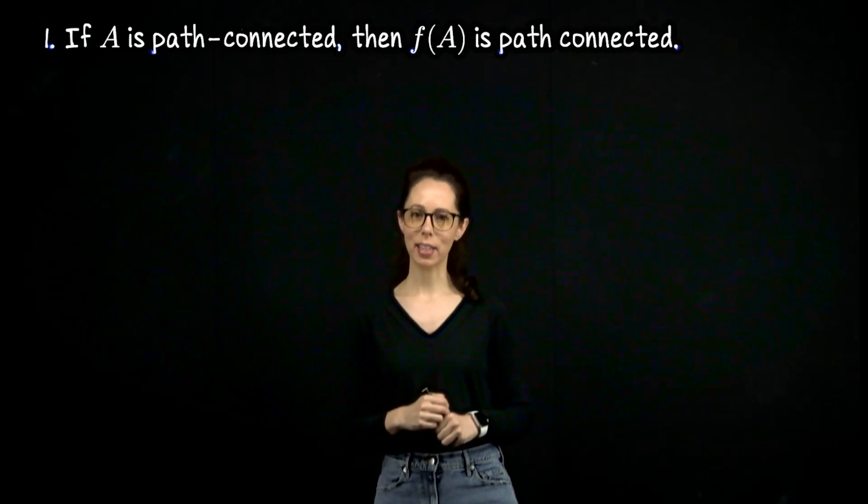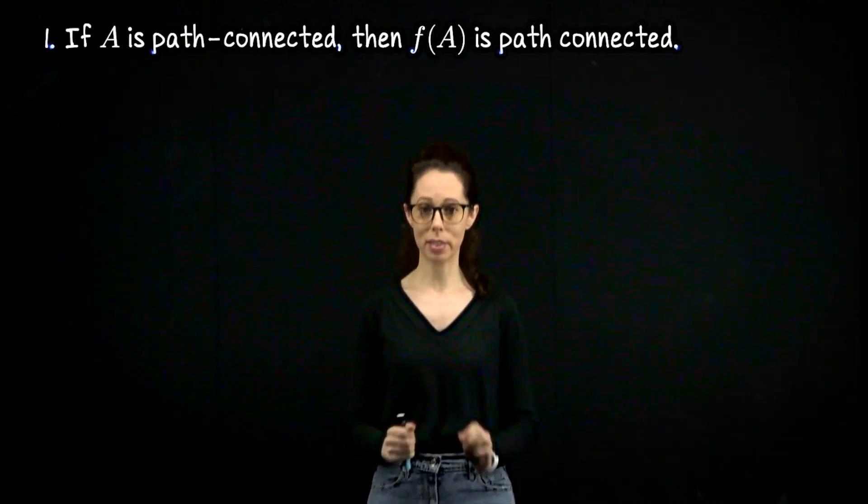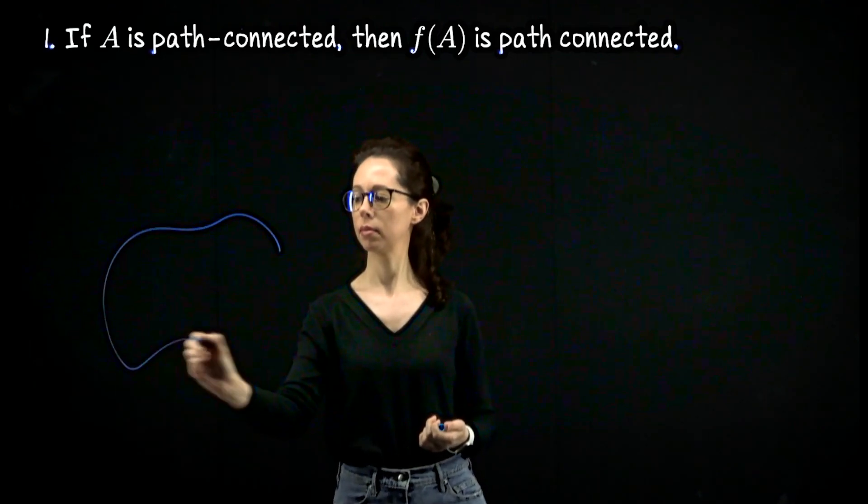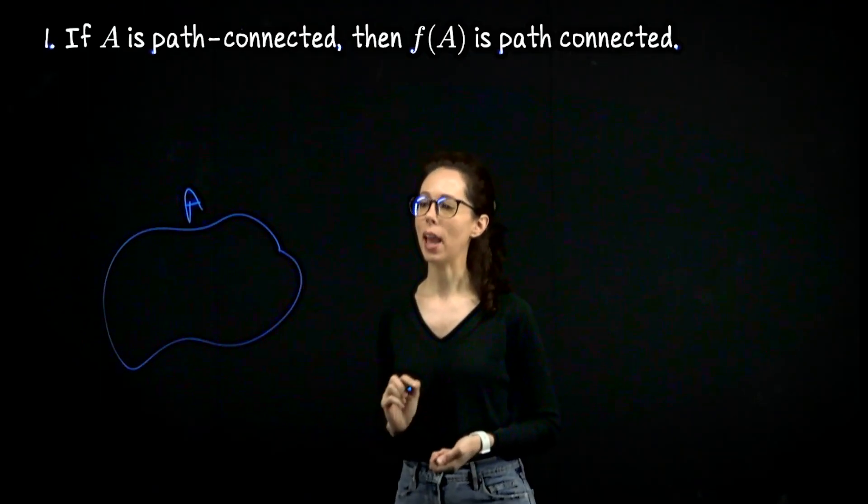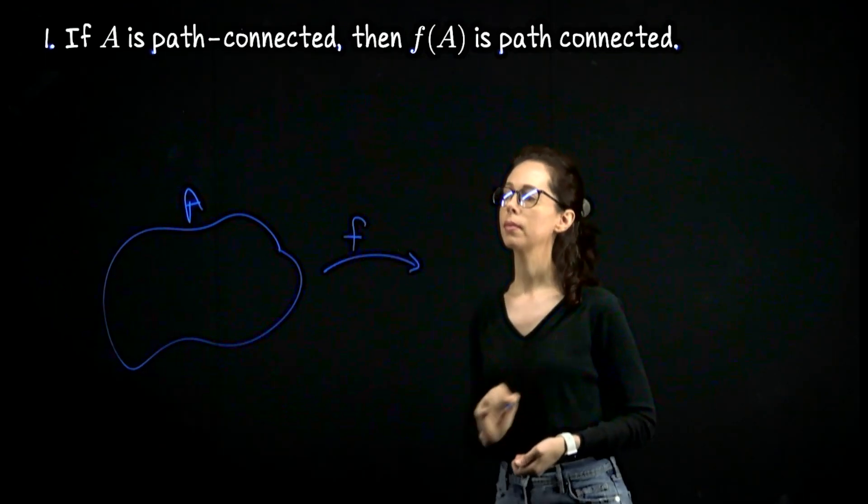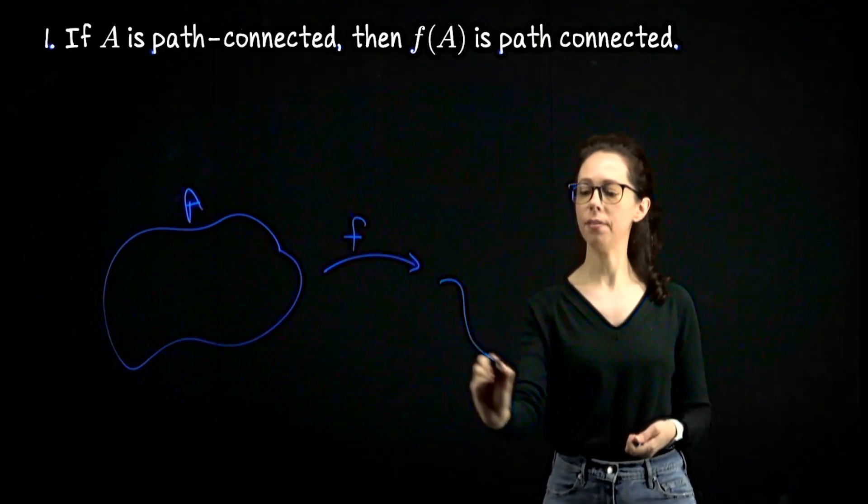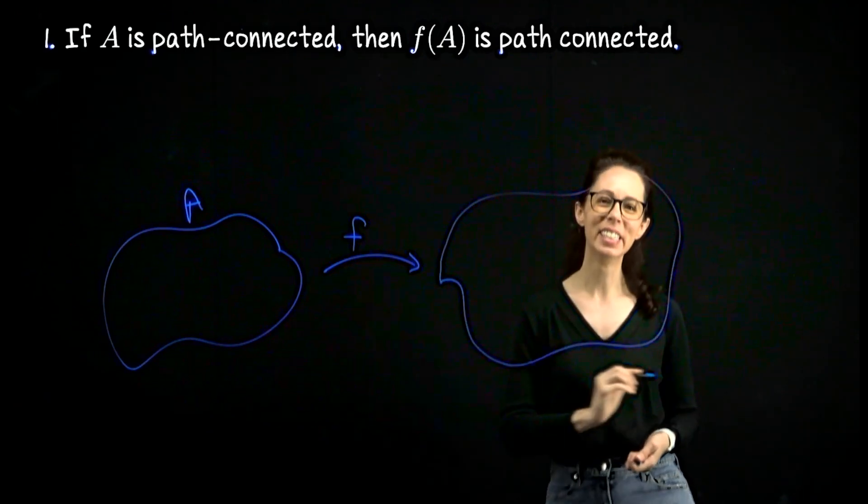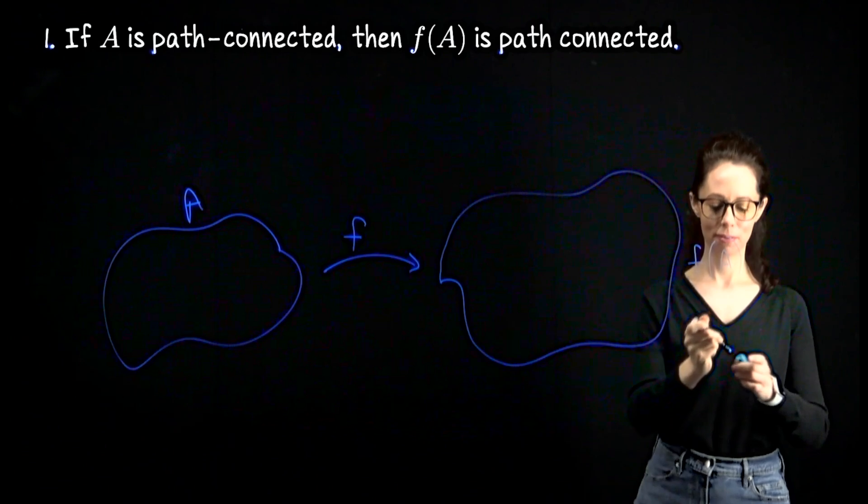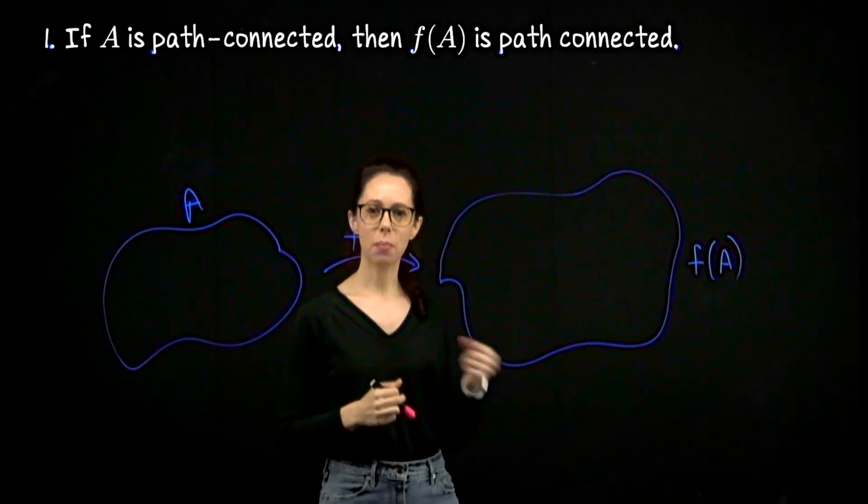Just like we did when we proved the analogous statement for compact domains, let's begin by sketching a picture of how the argument must proceed. Imagine that we have a domain which is path connected. So here is my domain A. It is the domain of a continuous function f. What we would like to do is show that the image f of A satisfies the definition of a path connected set.